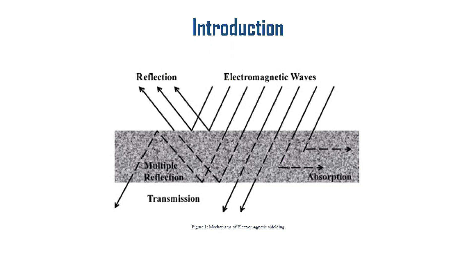Technical textiles are used instead of conventional textiles because of their superior performance. Electromagnetic shielding is done by limiting the flow of electromagnetic fields between two areas by using a barrier or applying a protection medium. If the barrier has high conductivity, high dielectric constant, or high magnetic permeability, then it can obstruct the electromagnetic radiation.